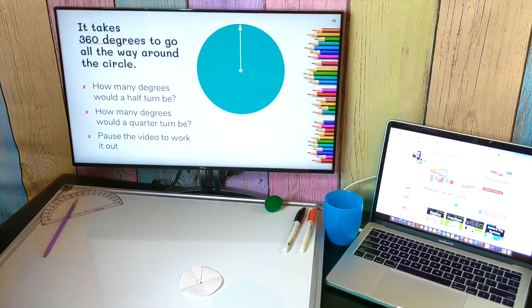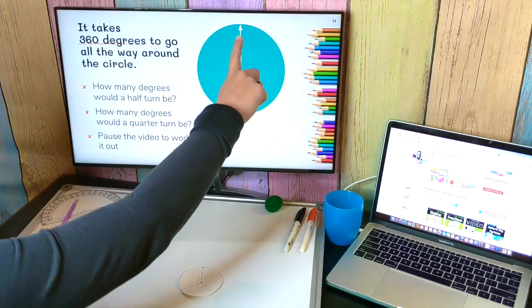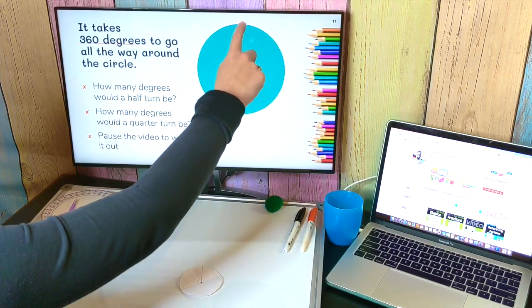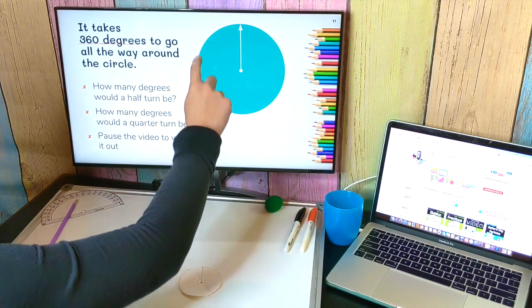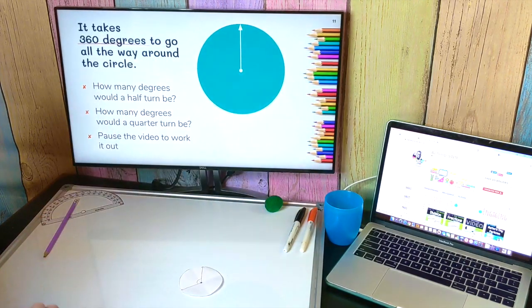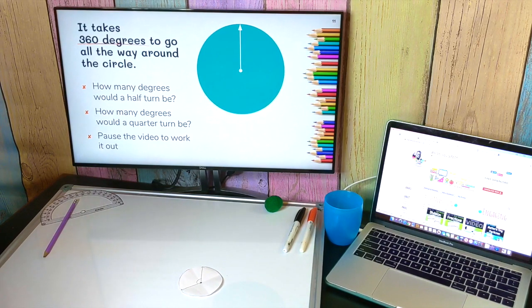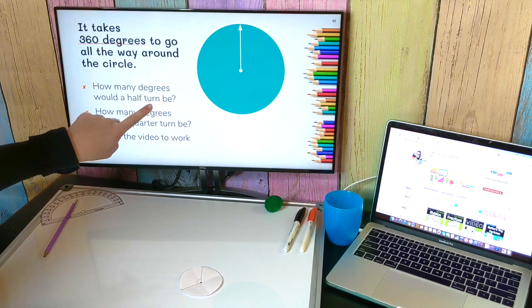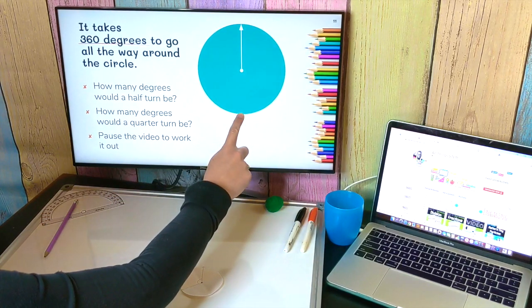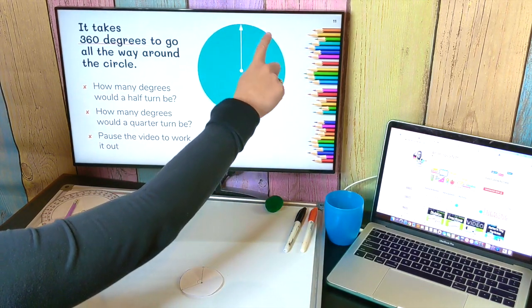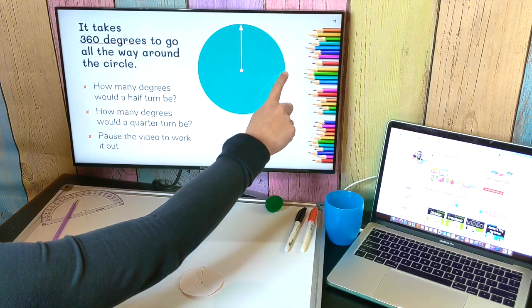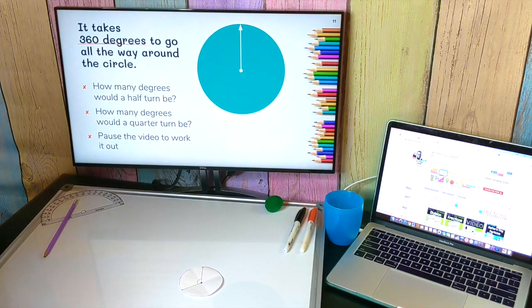Okay. So now it's your turn to try to figure some things out. If my whole circle, if it takes 360 of those degrees to go all the way around the circle, I want you to figure out two different things for me. I want you to figure out how many degrees a half turn would be, and I want you to figure out how many degrees a quarter turn would be. Pause the video and see if you can figure it out.